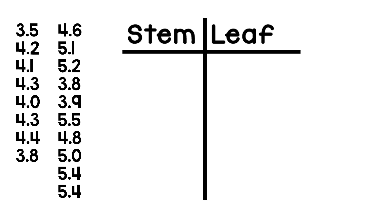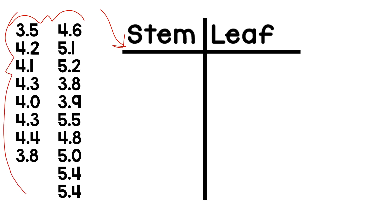Here is a stem and leaf plot and we're going to take these numbers and put them on it. These numbers represent something — a fourth grade teacher measured her students' heights and each number represents one student's height. So one student was three and five tenths feet tall, another was four and two tenths feet tall, and so on.